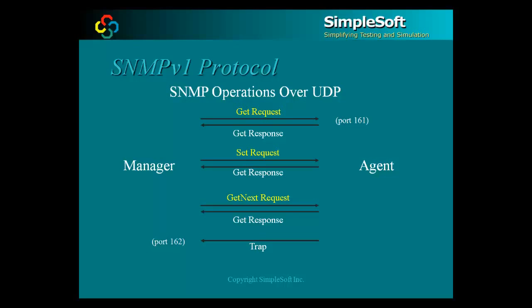SNMP packets run on top of a connectionless UDP service and use well-defined ports 161 and 162. Managers send SNMP requests to the agent on port 161, and agents send responses back to whatever source port was used by the manager. Agents send traps to port 162 of the specified manager.